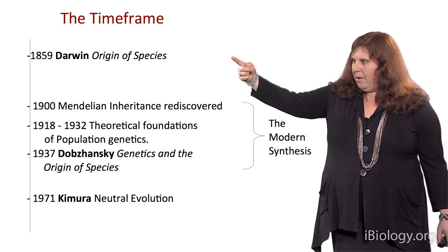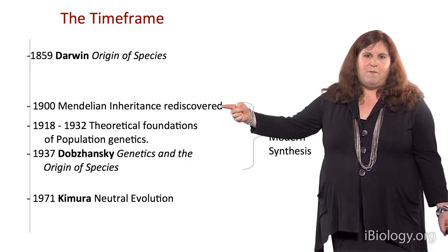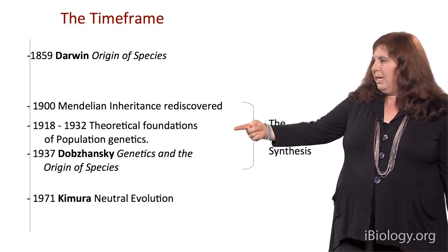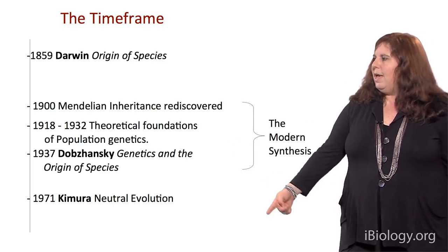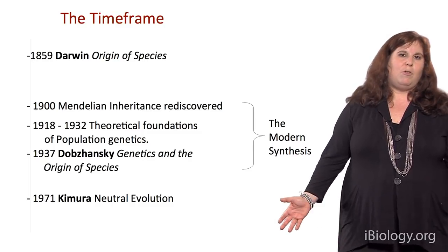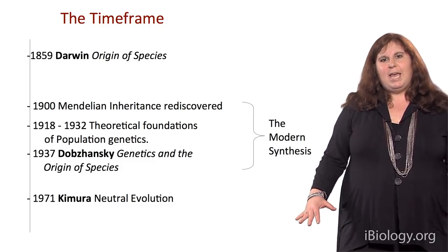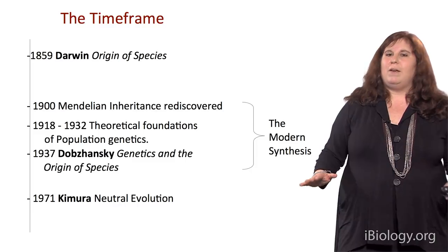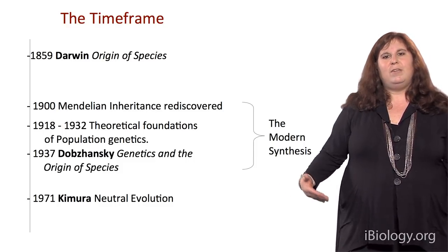Looking at this timeline: starting with the Origin of Species, Mendelian inheritance is rediscovered in 1900, then in the early 1900s we have the theoretical foundations of population genetics, and the modern synthesis in the 1930s. In the 1970s, Kimura's theory of neutral evolution proposed that most changes in speciation events are simply due to random genetic drift and new mutation events. Today we would say it's a combination of all of the above — there's certainly a lot of genetic drift, but natural selection is having a very important influence on phenotypic variation and even disease susceptibility.